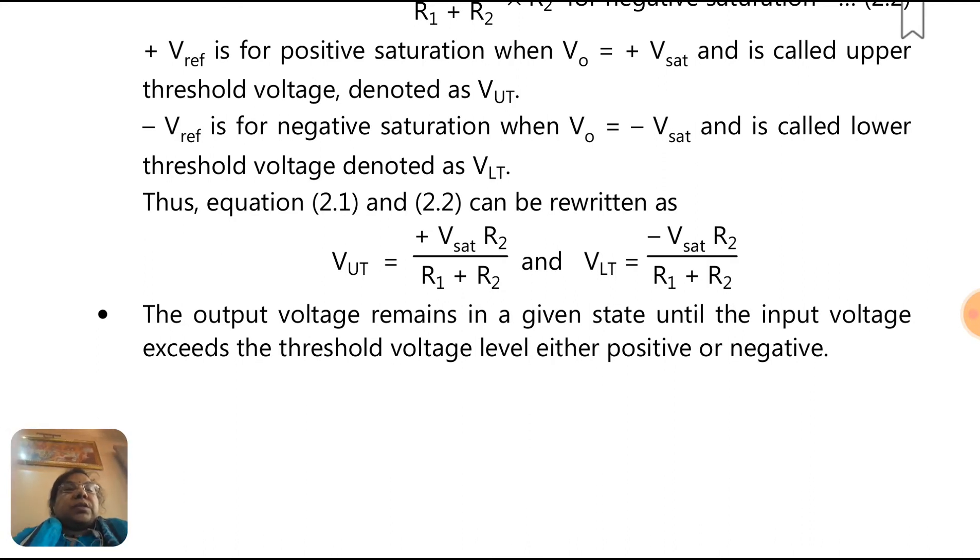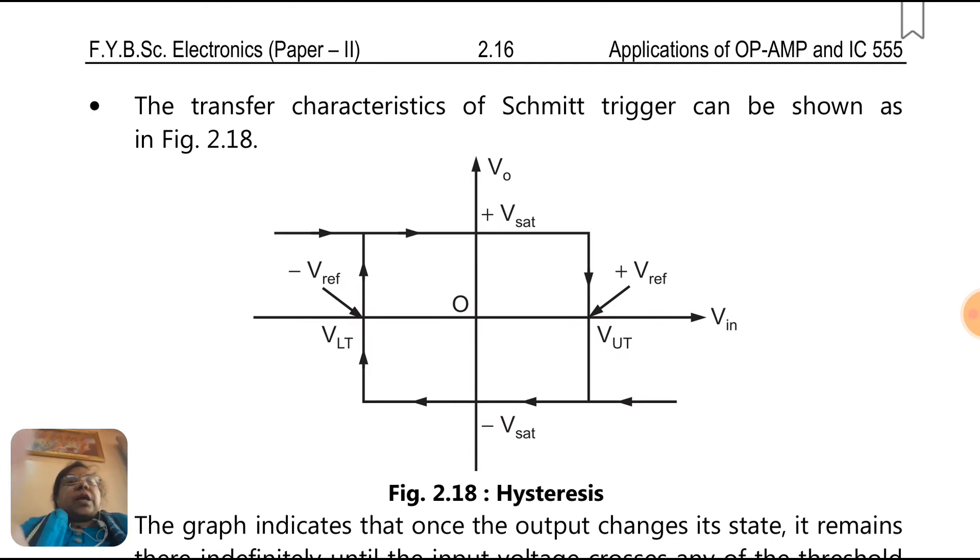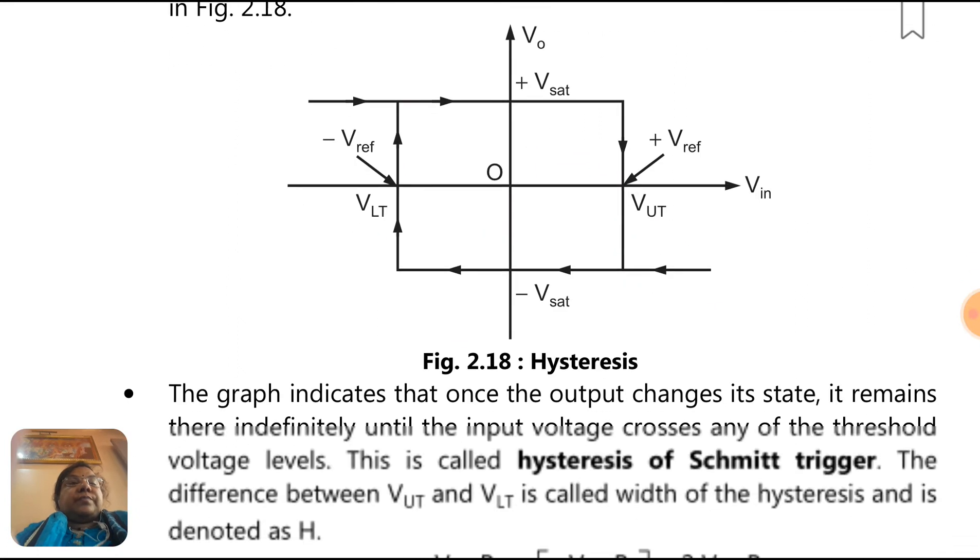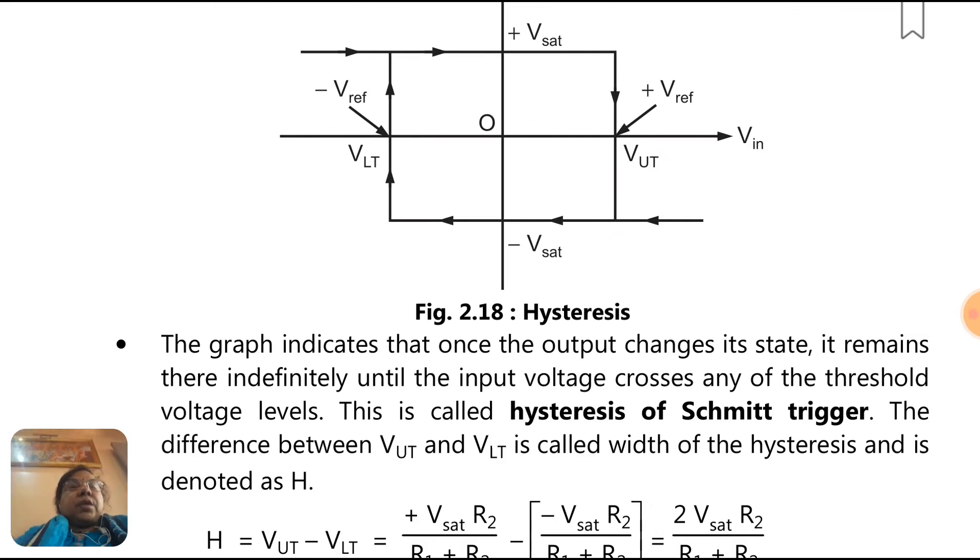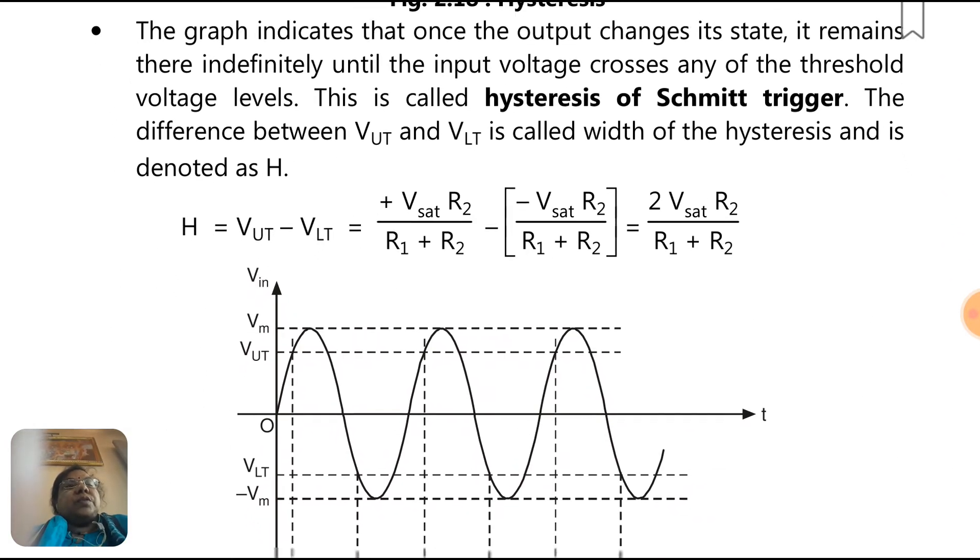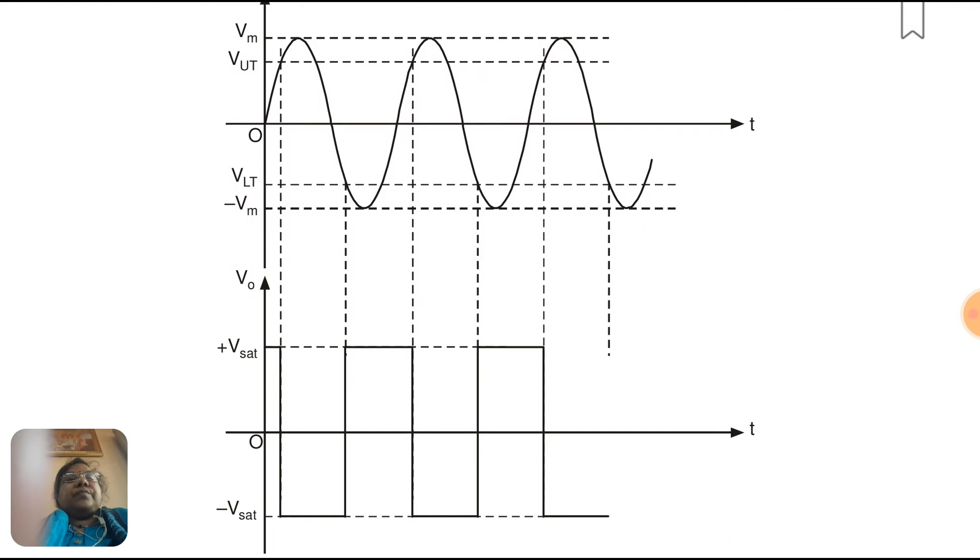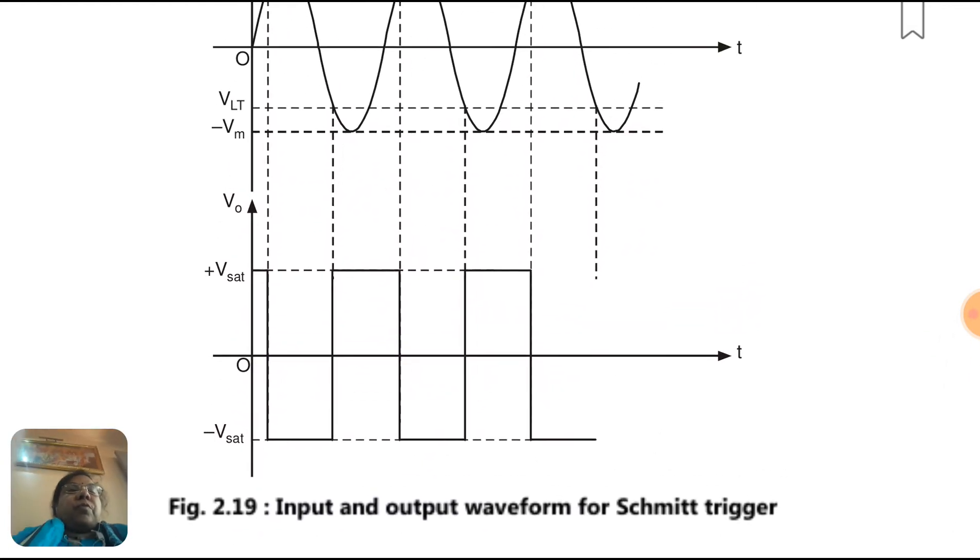The output voltage remains in a given state until the input voltage exceeds the threshold voltage level, either positive or negative. The transfer characteristic of a Schmidt trigger can be shown in this figure. This is known as a hysteresis curve. The graph indicates that once the output changes its state, it remains there indefinitely until the input voltage crosses any of the threshold voltage levels. The difference between V_UT and V_LT is called width of the hysteresis and is denoted as H. So H equals V_UT minus V_LT.